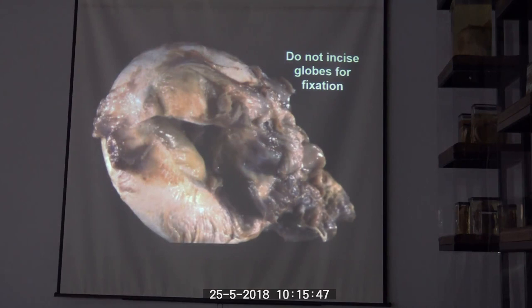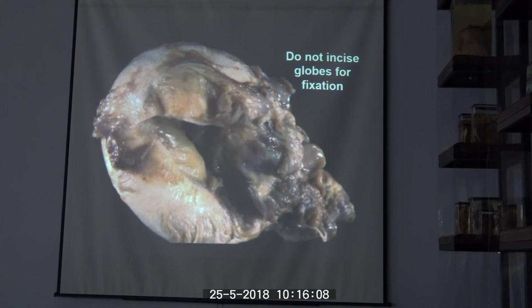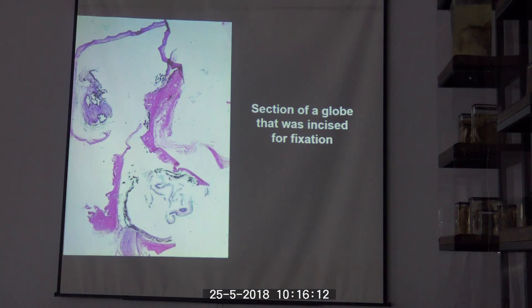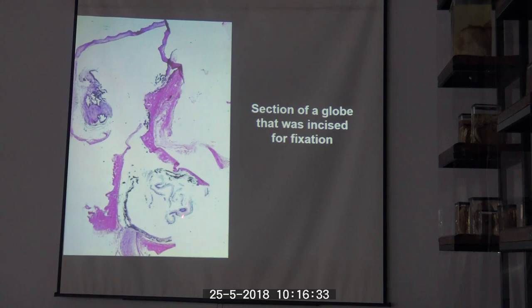Something that sometimes happens by accident — mostly when students collect globes from the necropsy floor, but also when people do it on purpose thinking they are helping — is incising the globe to facilitate formalin penetration. The problem is that you may end up with a specimen where everything starts falling apart, especially if the tissue is not well preserved. This makes it very tough to interpret changes, including whether retinal detachment is real or artifactual.